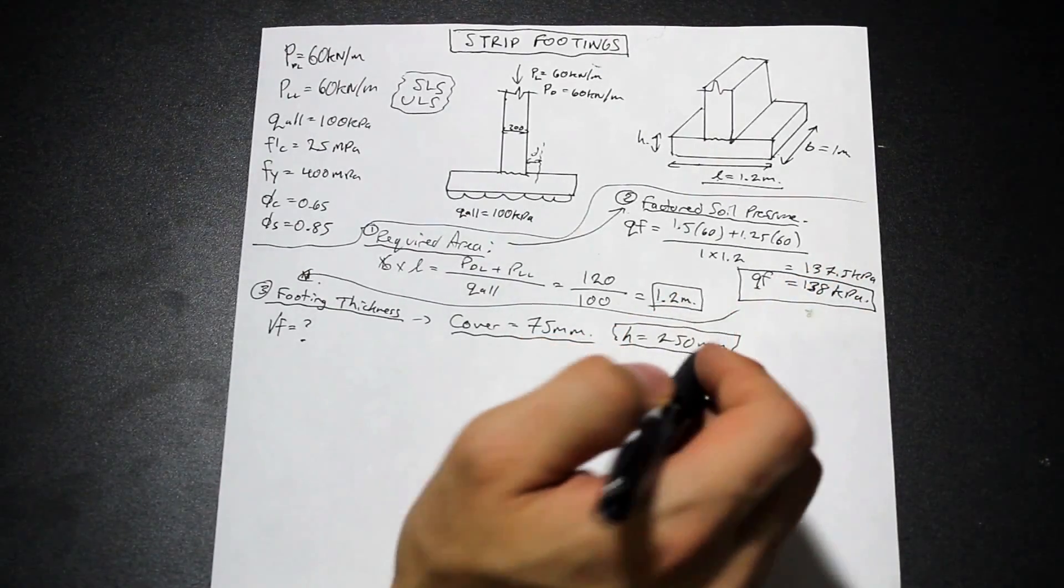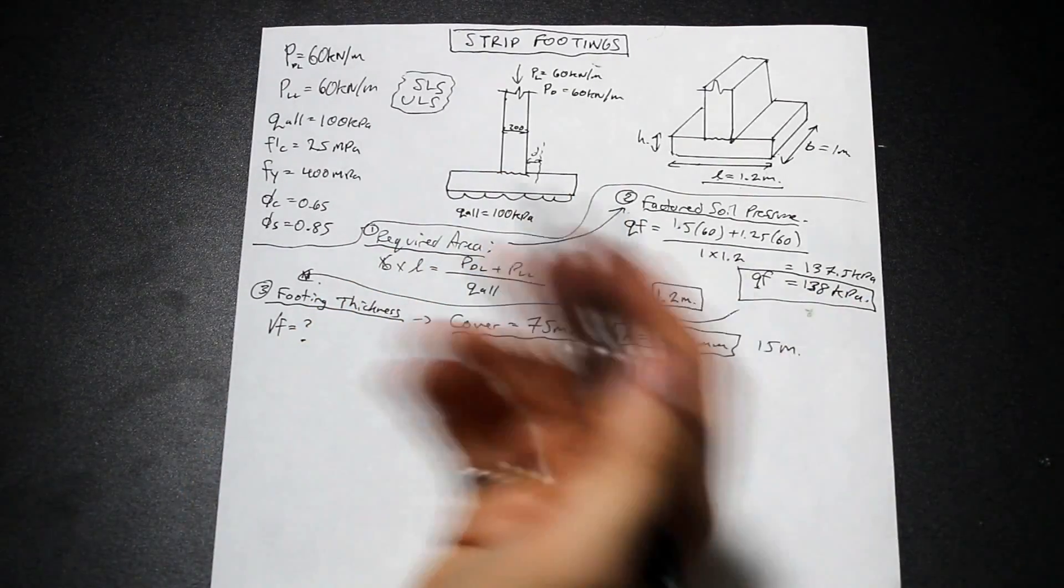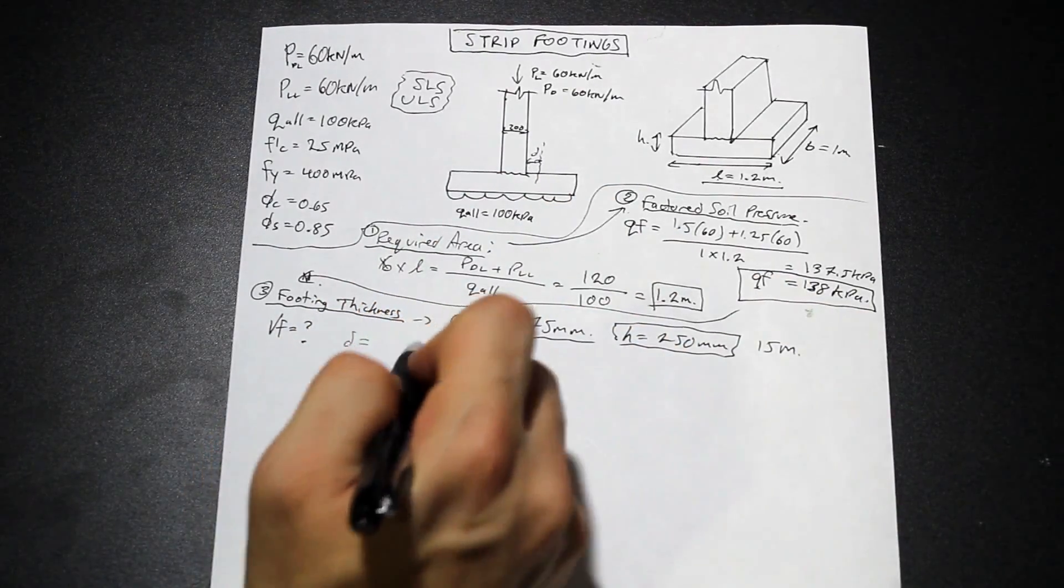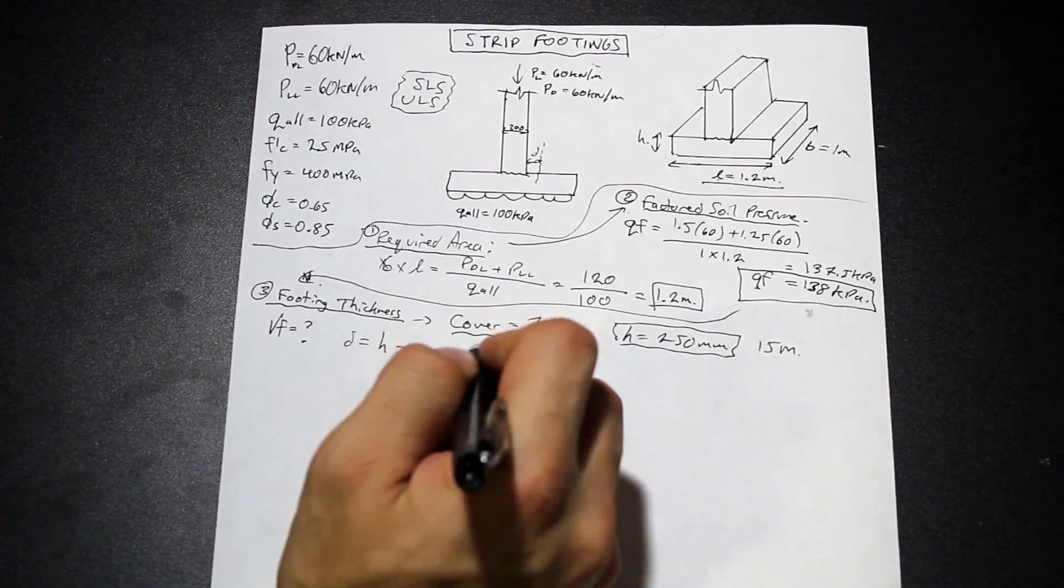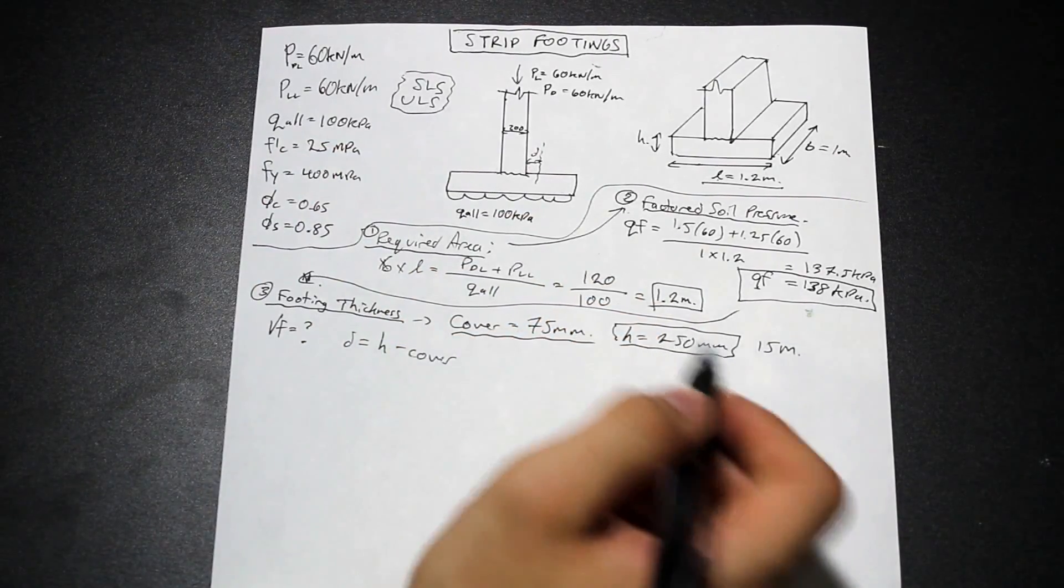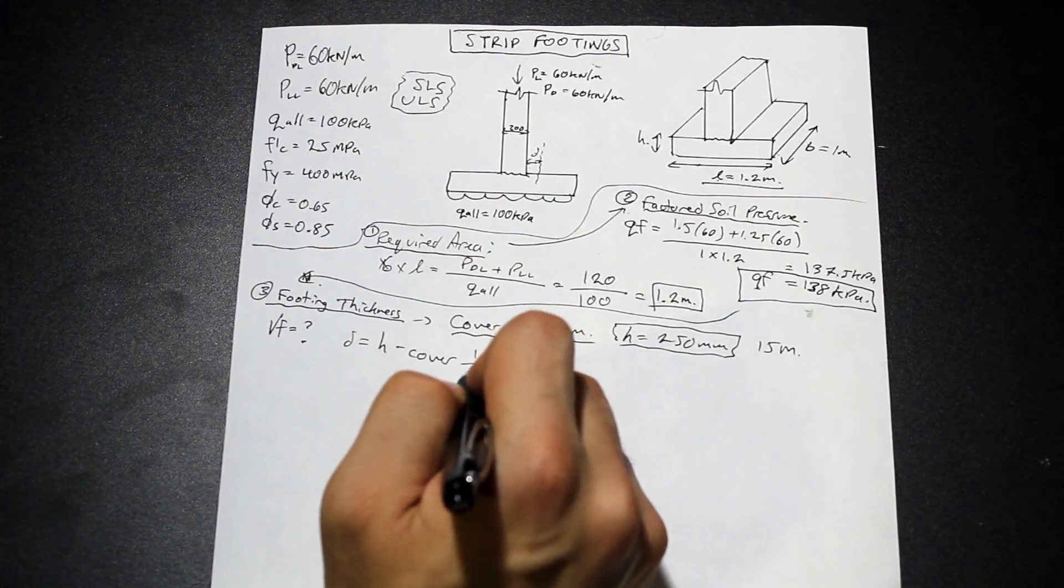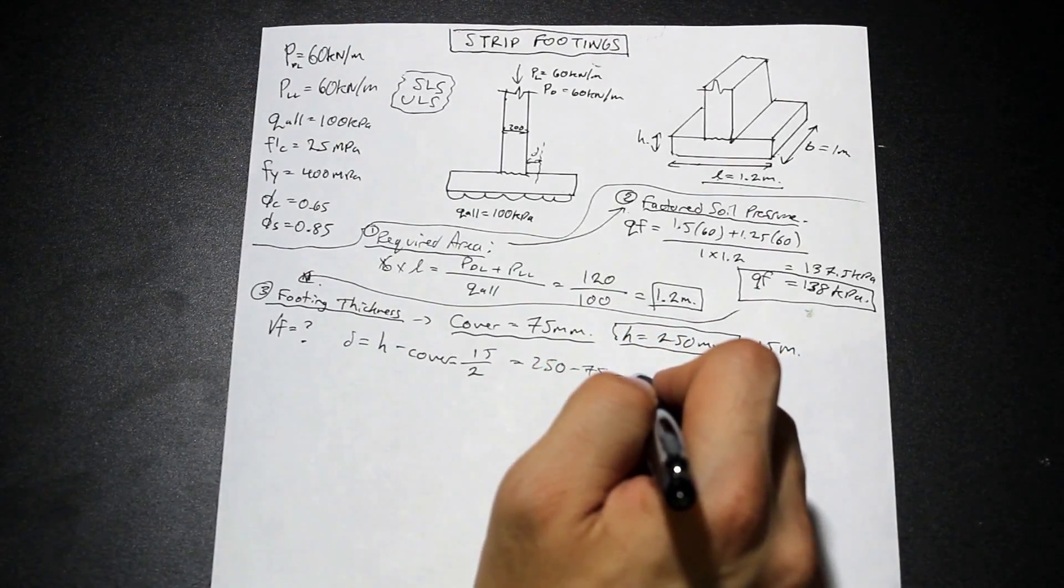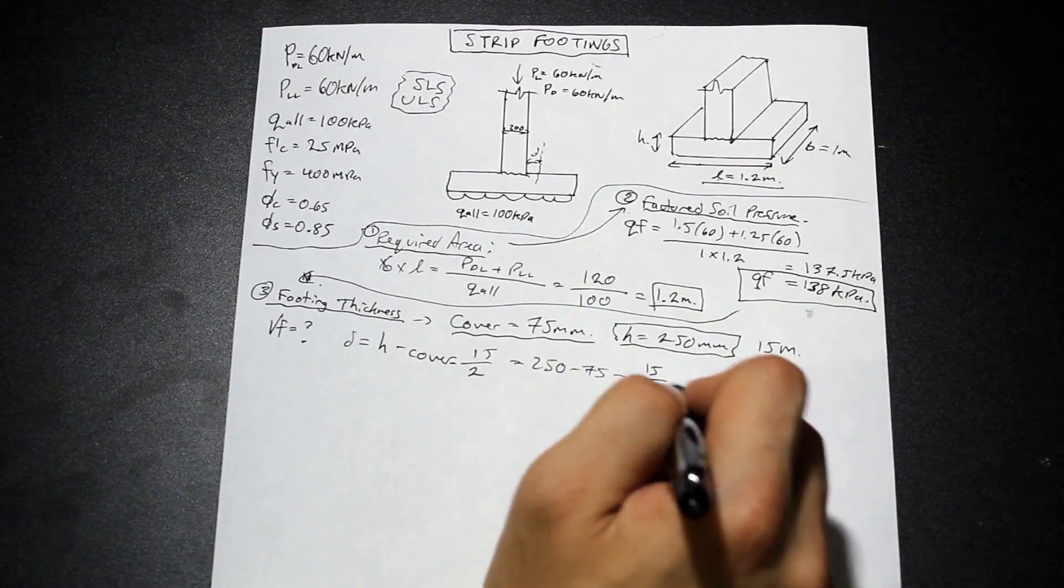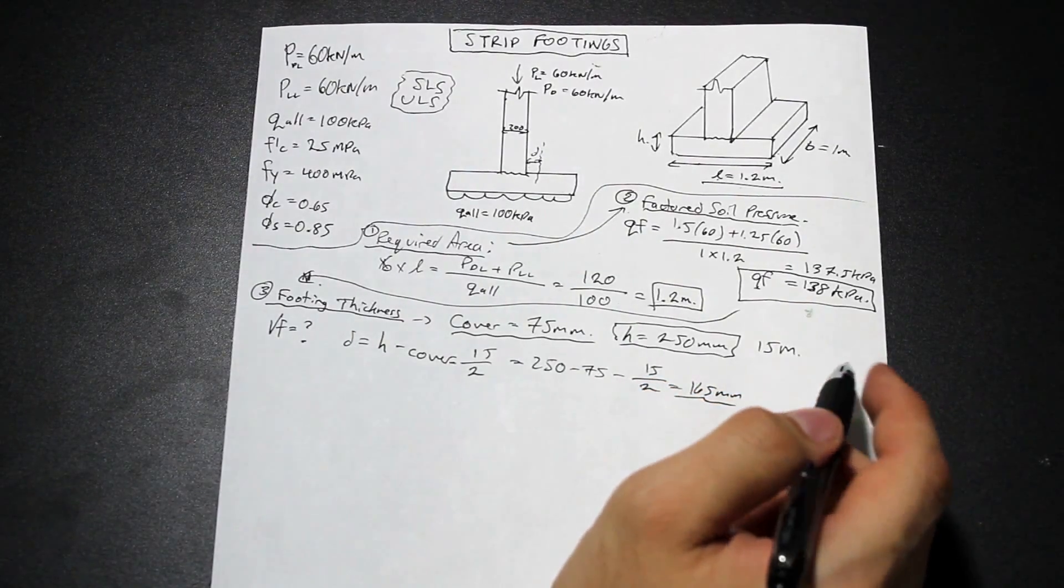It might help you in school as well if you write a spreadsheet like that. We're going to use 15M bars. And we know the formula for D, right? The formula for the effective depth is just simply the entire height minus the cover minus the height of one bar. So we're going to assume that there's no stirrups. So we have 15 over 2. And that is just simply going to be 250 minus 75 minus 15 over 2. So that gives us roughly 165 millimeters for our depth.